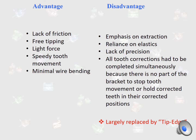Advantages of Begg appliances: lack of friction, free tipping, light force, speedy tooth movement, and minimal wire bending. However, disadvantages include emphasis on extraction, reliance on elastics, lack of precision, and all tooth correction had to be completed simultaneously because there is no part of the bracket to stop tooth movement or hold corrected teeth in their corrected position. The Begg appliance has been largely replaced by tip-edge.